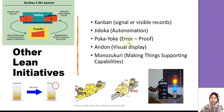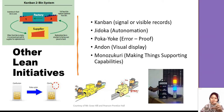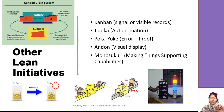Poka-yoke is error proofing. Lots of our daily life examples relate to Poka-yoke. For example, the SIM card — if you look at it, there's one part that is snipped off. Why? Because they make sure the SIM card we put inside our phone is in the correct position. If it were a plain rectangle, people might put it upside down or the wrong way. With that part cut off, you can only insert it one way. That's Poka-yoke.